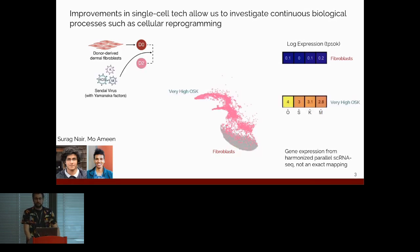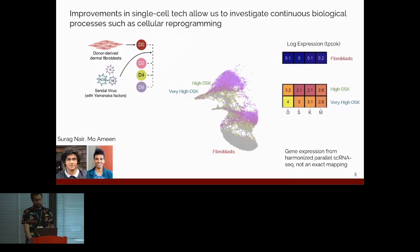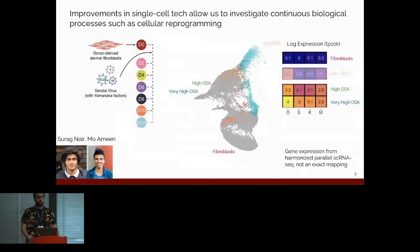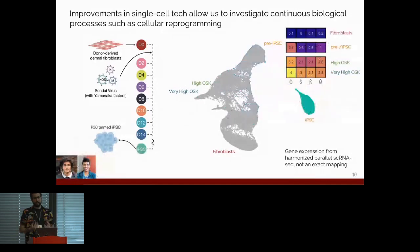Then they're infected with Sendai virus factors that overexpress OSK and M. After two days, we see that a lot has happened, including the emergence of a population of cells that have very high transcript abundance for OSKM, which you'd expect. After two more days, things continue to progress. And we see that now this population seems to have diminished in transcript abundance for those four factors. Then over time, we see that more and more of this UMAP starts to fill out until around day 12, when we get to pre-IPSC cells.